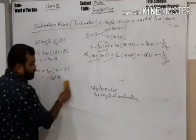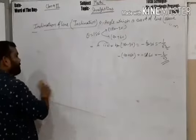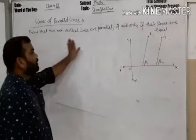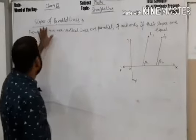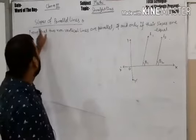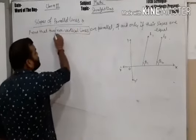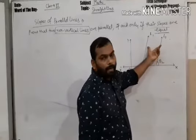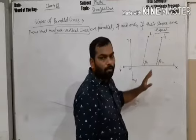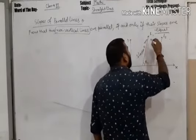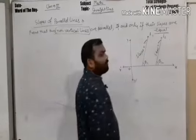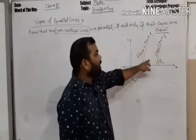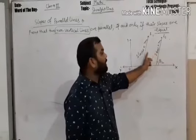Now let us see what is the condition for parallel lines. We will prove that two non-vertical lines are parallel if and only if their slopes are equal. Suppose two lines L1 and L2 are given with inclinations theta1 and theta2, and slopes M1 and M2. We will prove it in two conditions: first, taking that the lines are parallel and proving the slopes are equal; then the reverse condition.